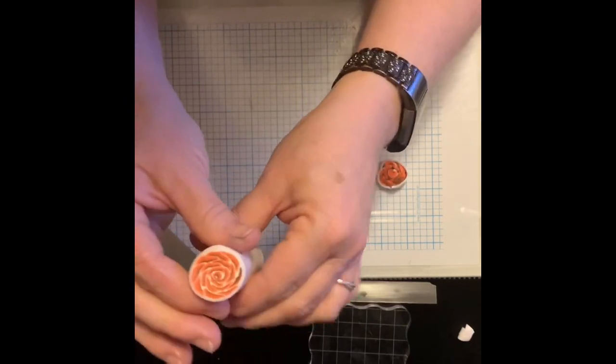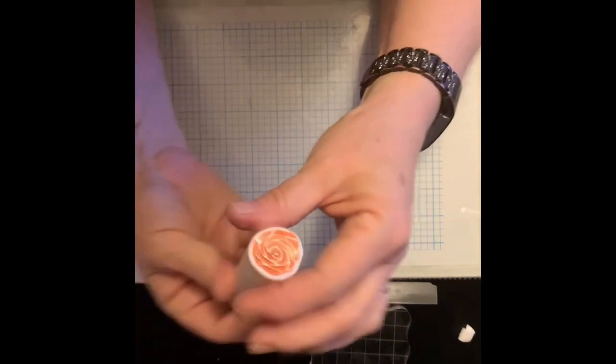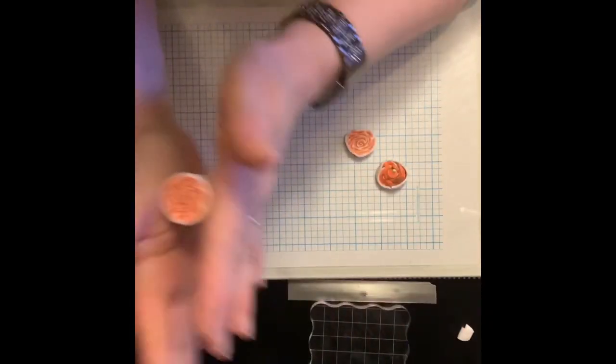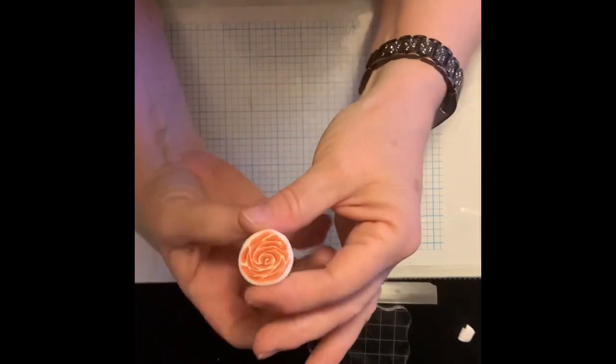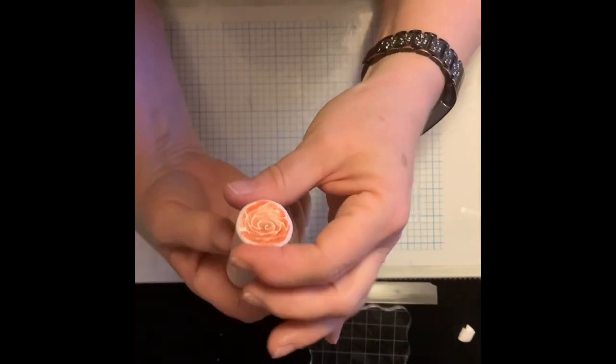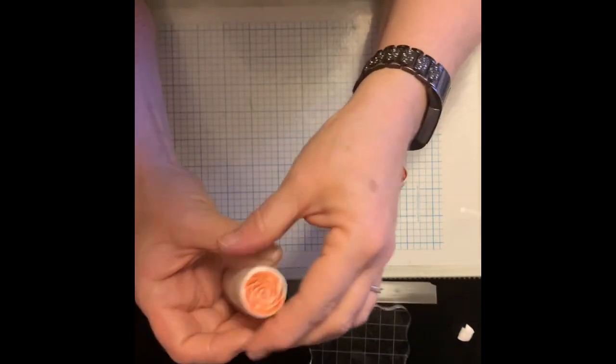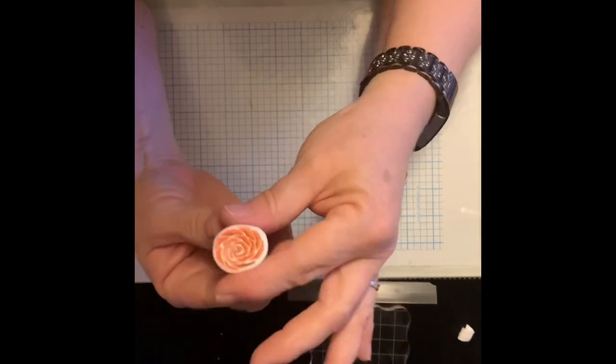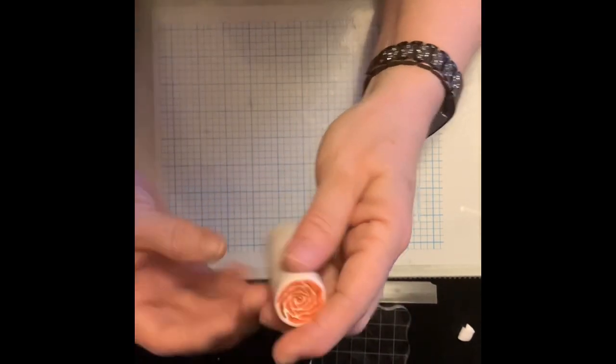That's all there is to the rose cane. And you can use any color you want. I've done them in yellow, blue. This one here is a three color. You could probably do it in two colors if you want. For a skinner blend. You can make any color you want. Make any rose you want. So pretty.